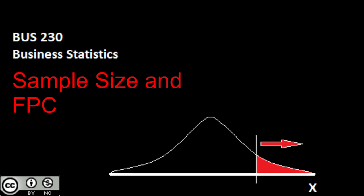By 'results that you want,' I don't mean forcing or torturing your data to get some specific value — I mean getting a level of error that you're happy with. We'll look at how to determine appropriate sample size for calculating the sample mean as well as for sample proportions. We'll then wrap up by looking at the FPC, or the Finite Population Correction Factor.